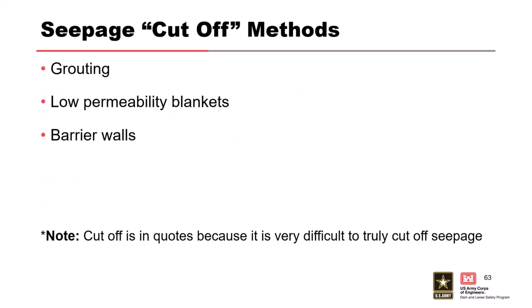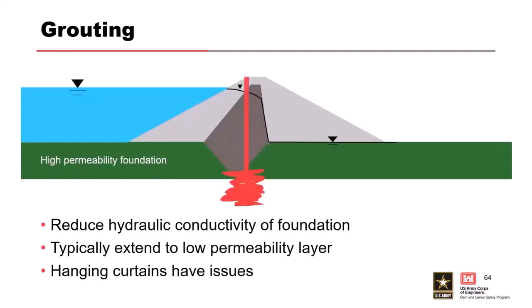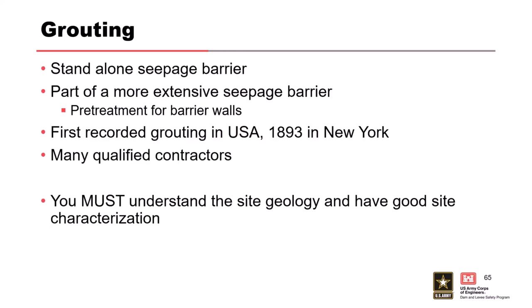Seepage cutoff methods — or barrier walls, as they're now called, because you really can't cut it all off, you can only reduce it; everything has an inherent permeability. We'll touch on grouting before lunch. Grouting is used to reduce the conductivity of a foundation layer. You want to get it down into a low-permeability zone — you don't want a hanging grout curtain, as it'll just go underneath and you haven't solved your problem. Grouting can be used as a standalone seepage barrier, and has been on many dams. The first recorded grouting in the US was in 1893 — this is not new technology. It can also be used as part of a barrier wall system as a pre-treatment.